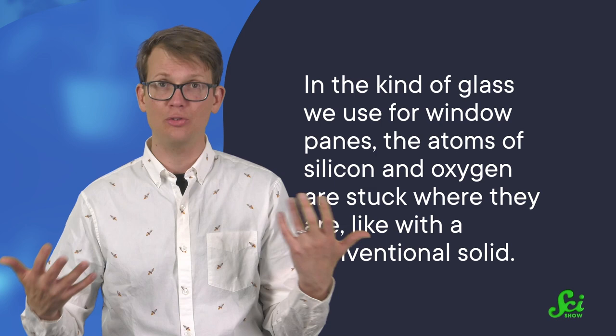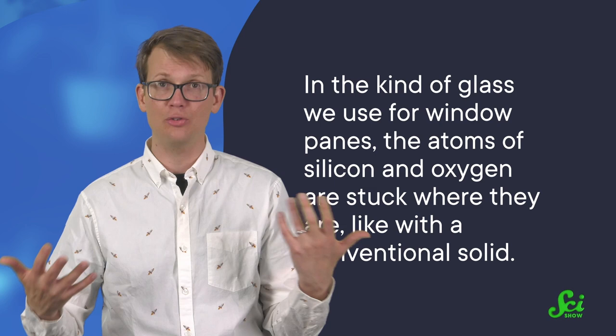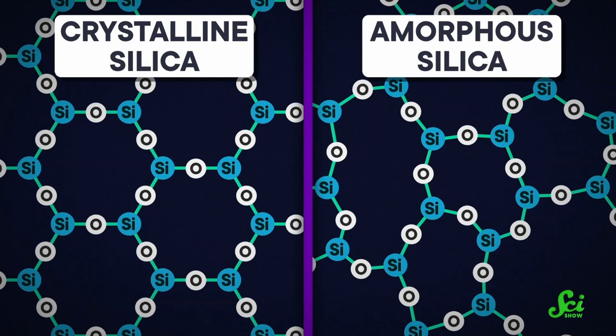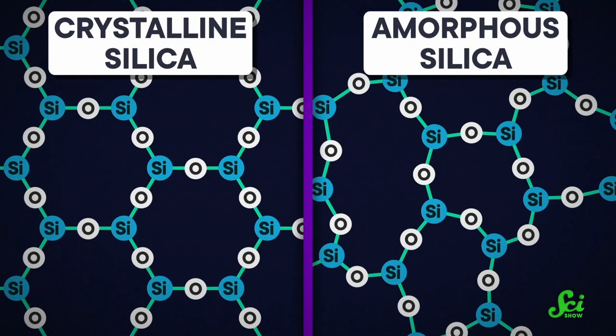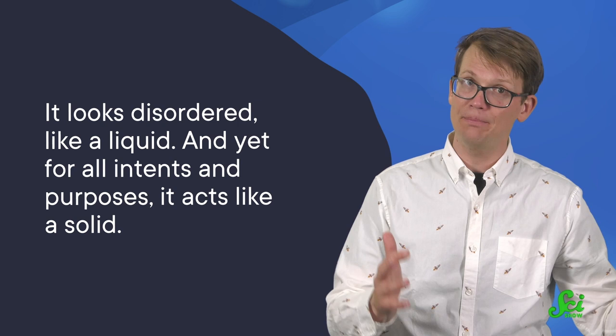which is a solid that lacks an ordered structure. In the kind of glass we use for window panes, the atoms of silicon and oxygen, plus any extra additions, are stuck where they are, like with a conventional solid. And they're fused into a sprawling interconnected network. But that interconnected structure doesn't have a regular repeating long-range pattern. It looks disordered, like a liquid. And yet, for all intents and purposes, it acts like a solid.